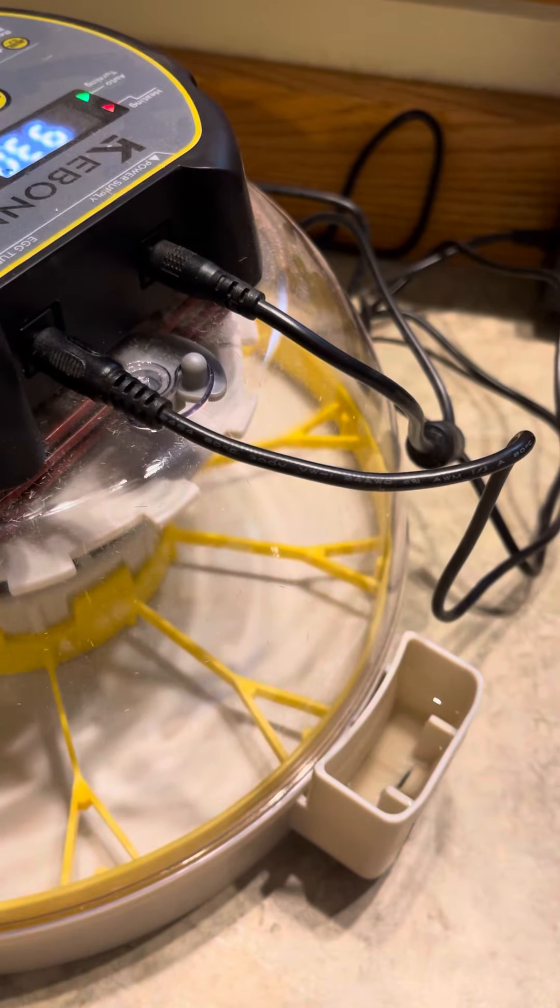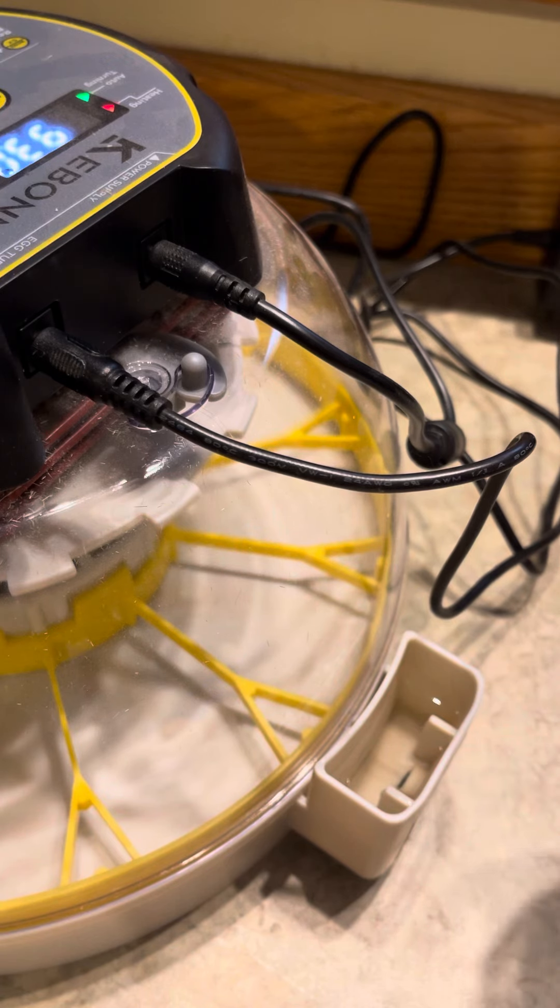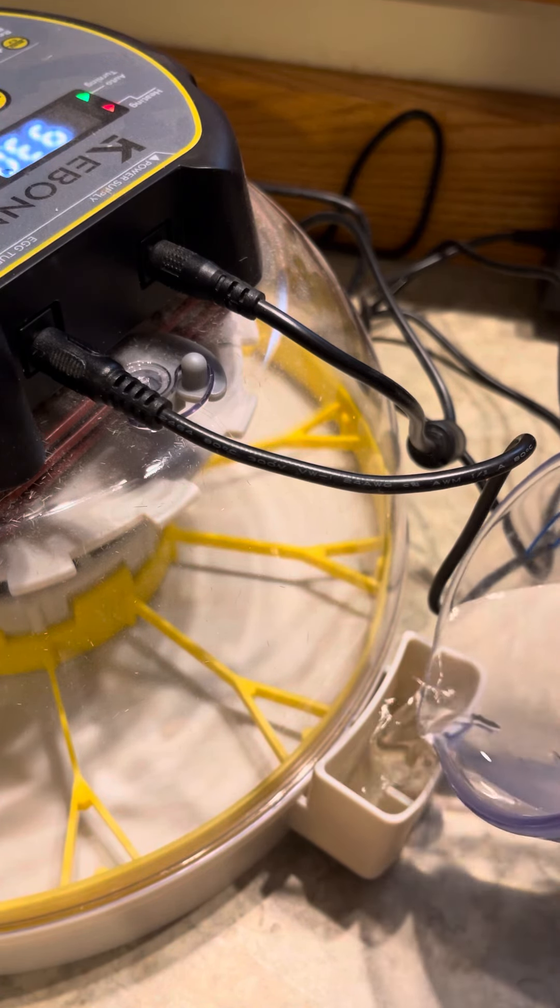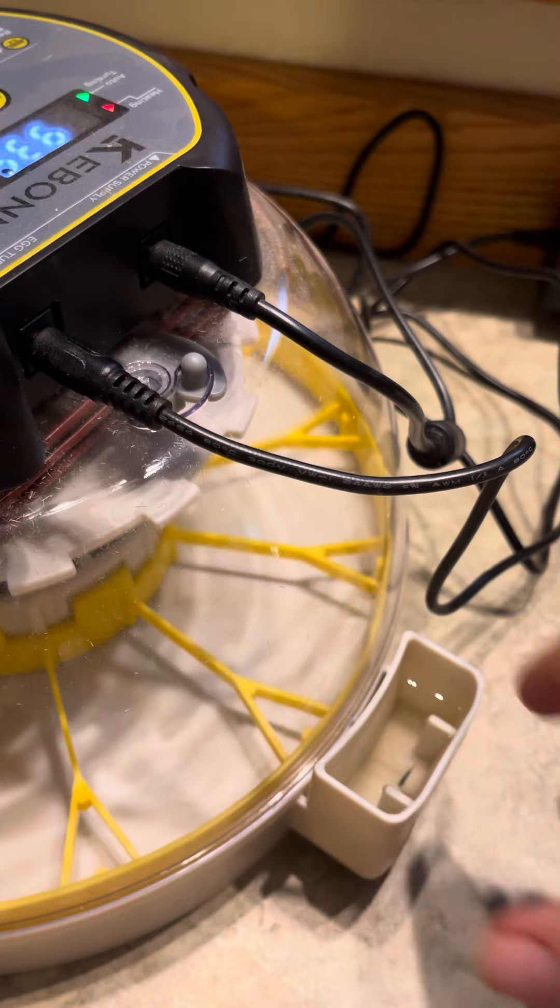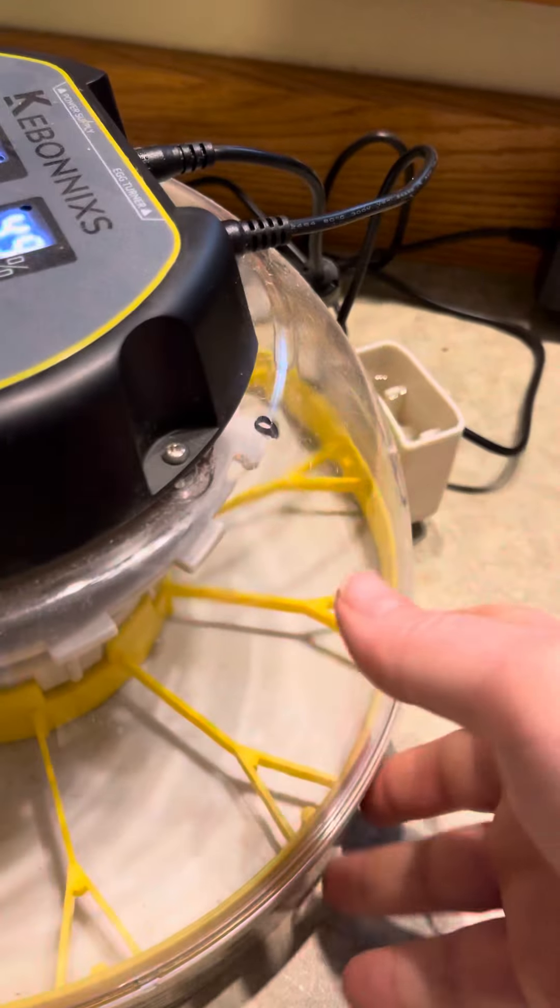On the outside is the reservoir that you can add water to regulate your humidity. All you do is add the water. If you add too much, don't panic - you can just use a paper towel to suck the water back out. It's pretty easy to use.